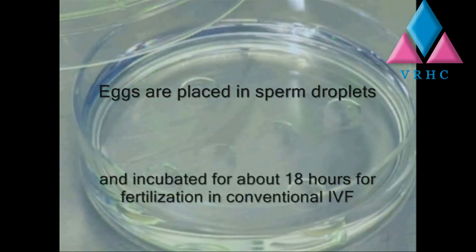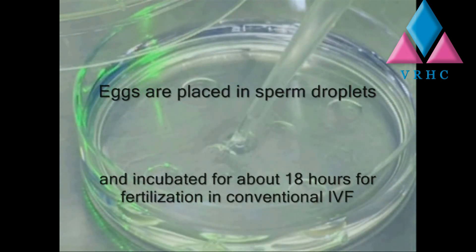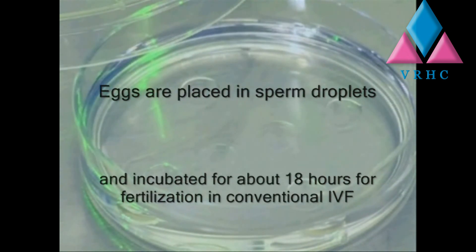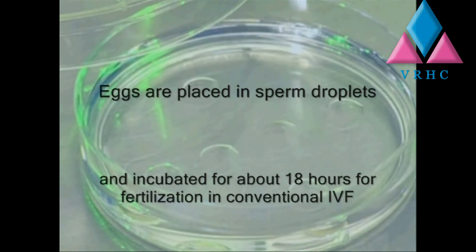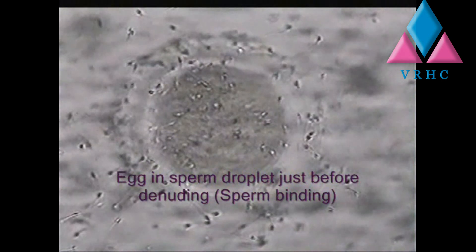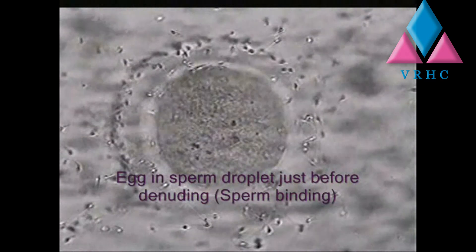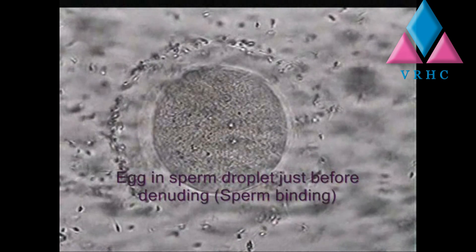In in vitro fertilization, sperm droplets are made on a petri dish, with each droplet containing about 30,000 spermatozoa. Selected oocytes are then placed in those droplets and incubated for 18 hours for fertilization. This is how it looks when spermatozoa bind around an oocyte — the oocyte decides which spermatozoon it should allow in.